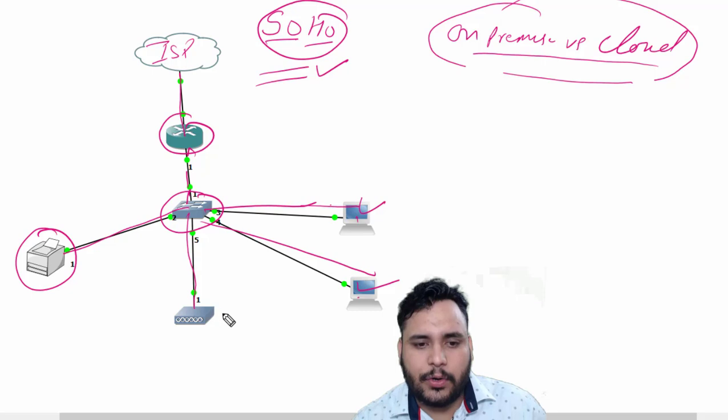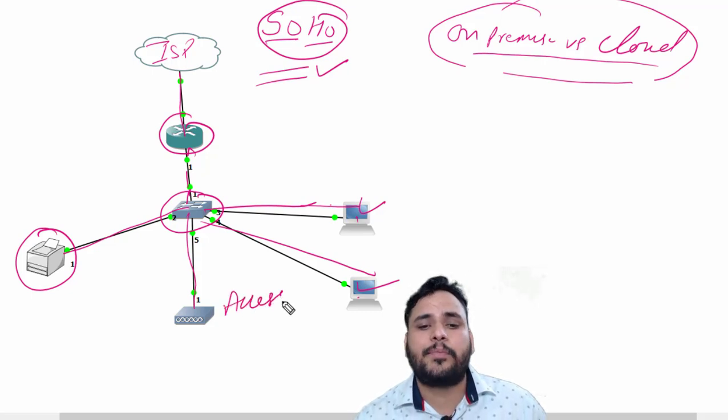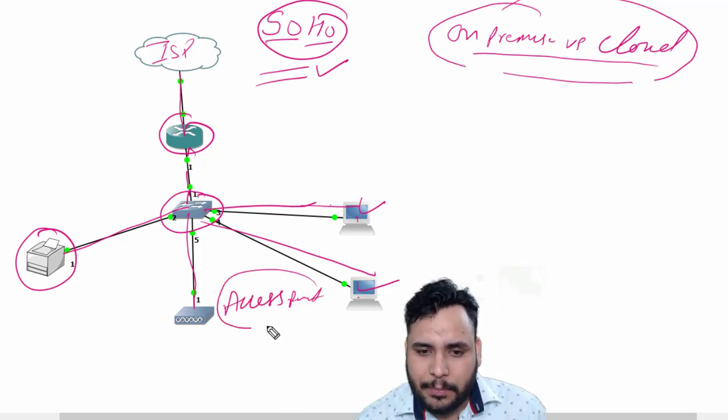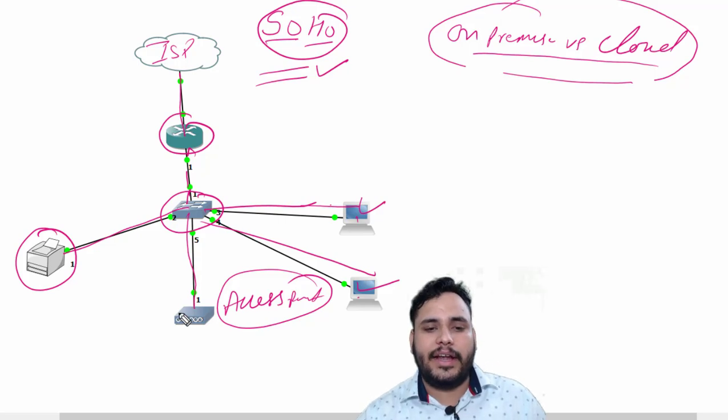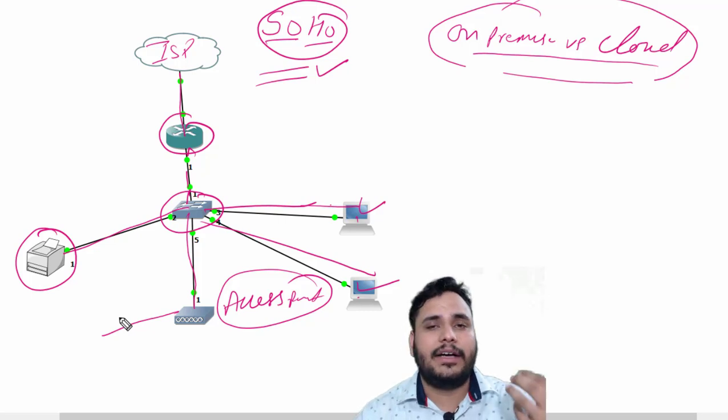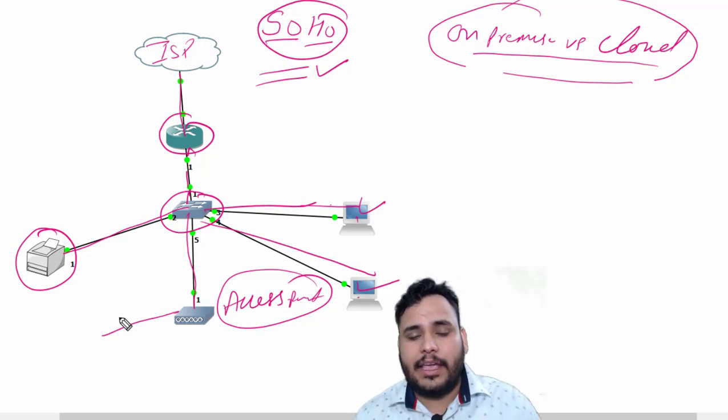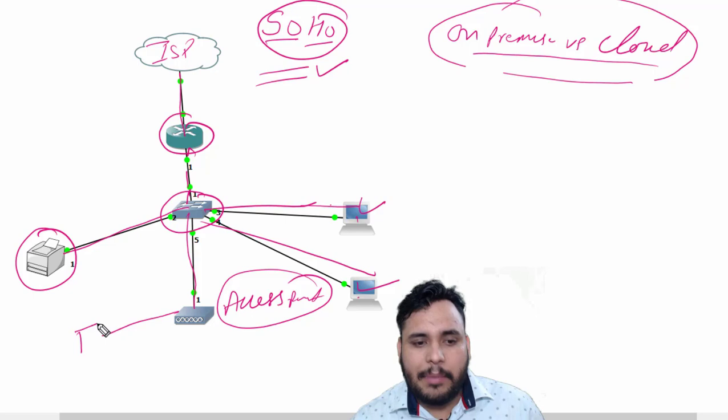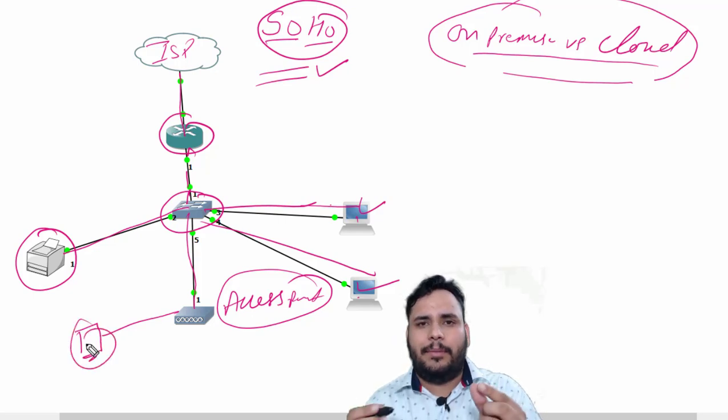After that, switch is going to connect with one access point. And access point basically use here to connect those devices which are not able to connect with your LAN. Like your cable design. So like my mobile is not able to connect with cable.